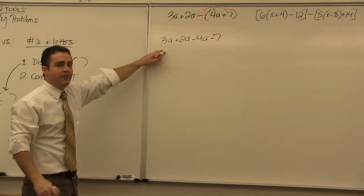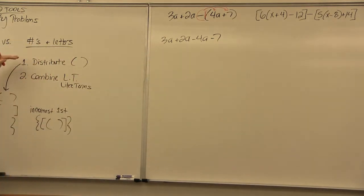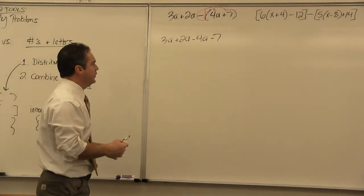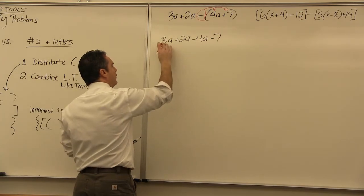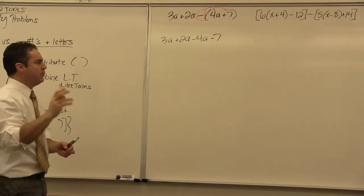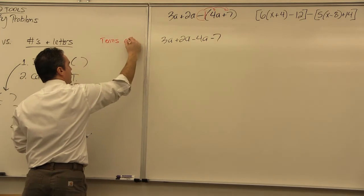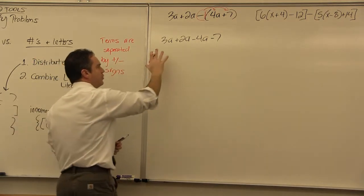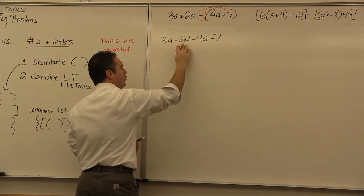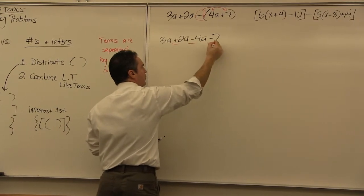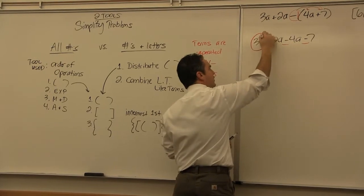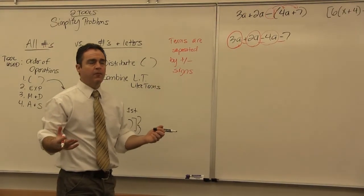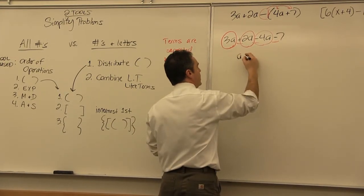We have 3a + 2a − 4a − 7. Do we have any more parentheses? We do not. Next step: combine like terms. Terms are separated by plus and minus signs, so we have four terms. 3a and 2a make 5a; 5a minus 4a makes a single a. So our result is a minus 7.